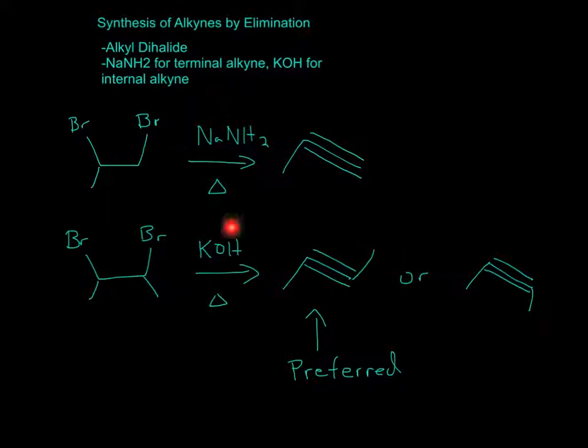Notice how in both cases, it's different reactants. So in this case, since you have two bromines, you have your NaNH2 and heat. This just stands for heat, and it will form a terminal alkyne.